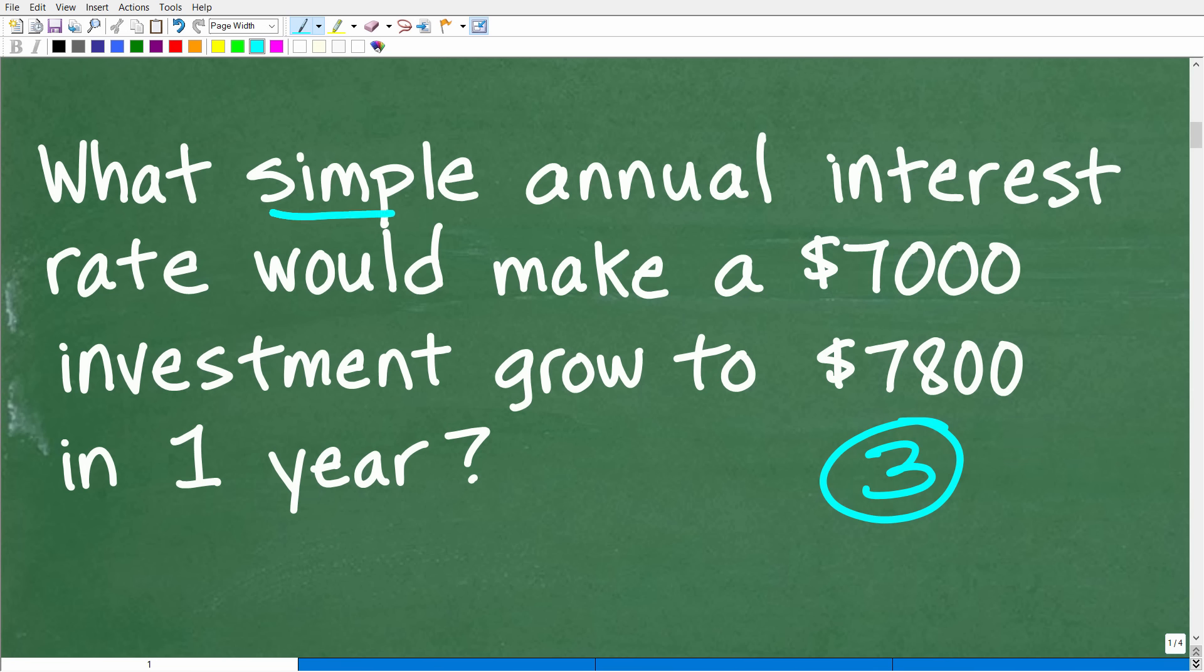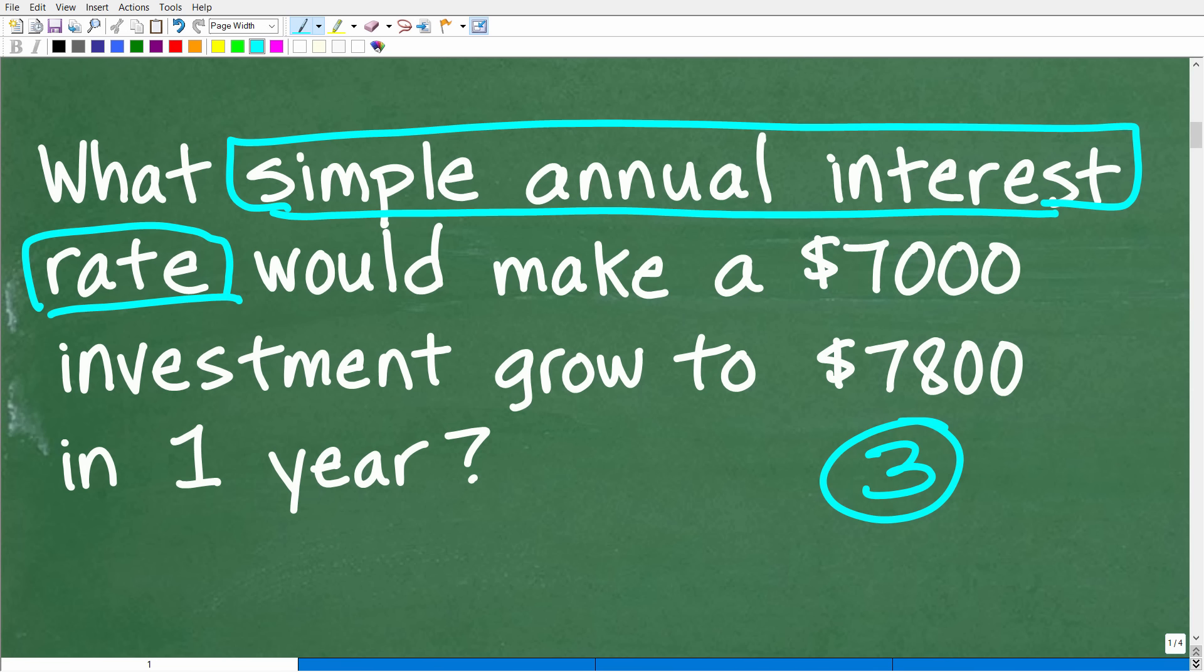So, we have this simple annual interest rate. This is what we're looking for, right? What does this mean? Well, I'll explain what this means in just one second. But, effectively, this is kind of common sense, right? We're making an investment of $7,000. We want to grow it to $7,800 in a one-year period. How do we get anything to grow? How do we make money on our money?